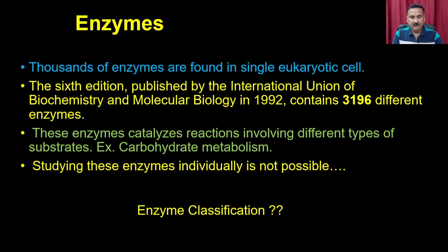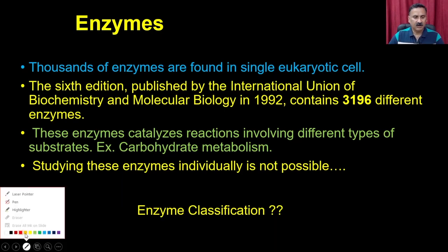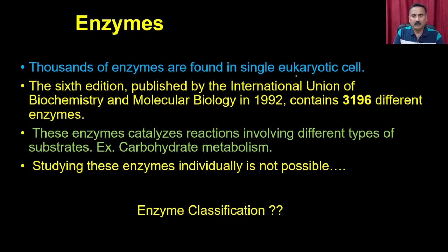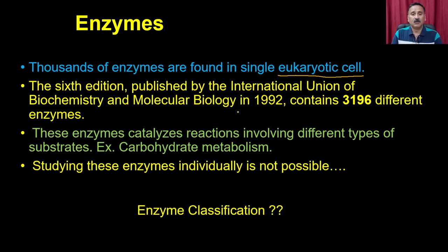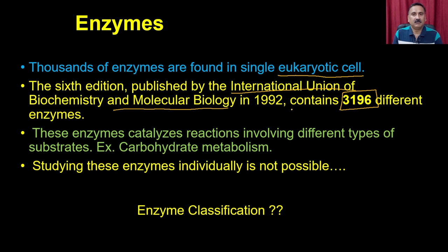The first question is: why is there a need to classify enzymes? We have thousands of enzymes found in a single eukaryotic or prokaryotic cell. These enzymes are present in the cytosol, in different organelles, and some are even part of the plasma membrane. As per the sixth edition published by the International Union of Biochemistry and Molecular Biology, there are 3,196 different enzymes, and by now the number could be even higher.